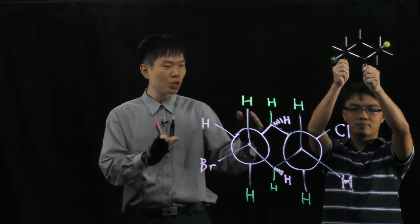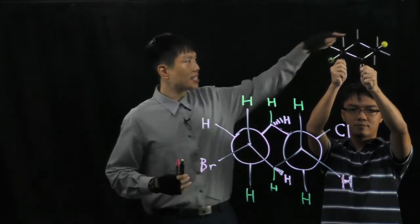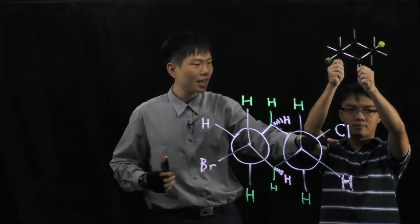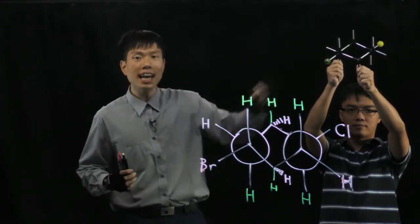We are trying to teach you how to draw the Newman projection of this molecule. This yellow ball represents the chlorine atom. The bromine is represented by this green atom.